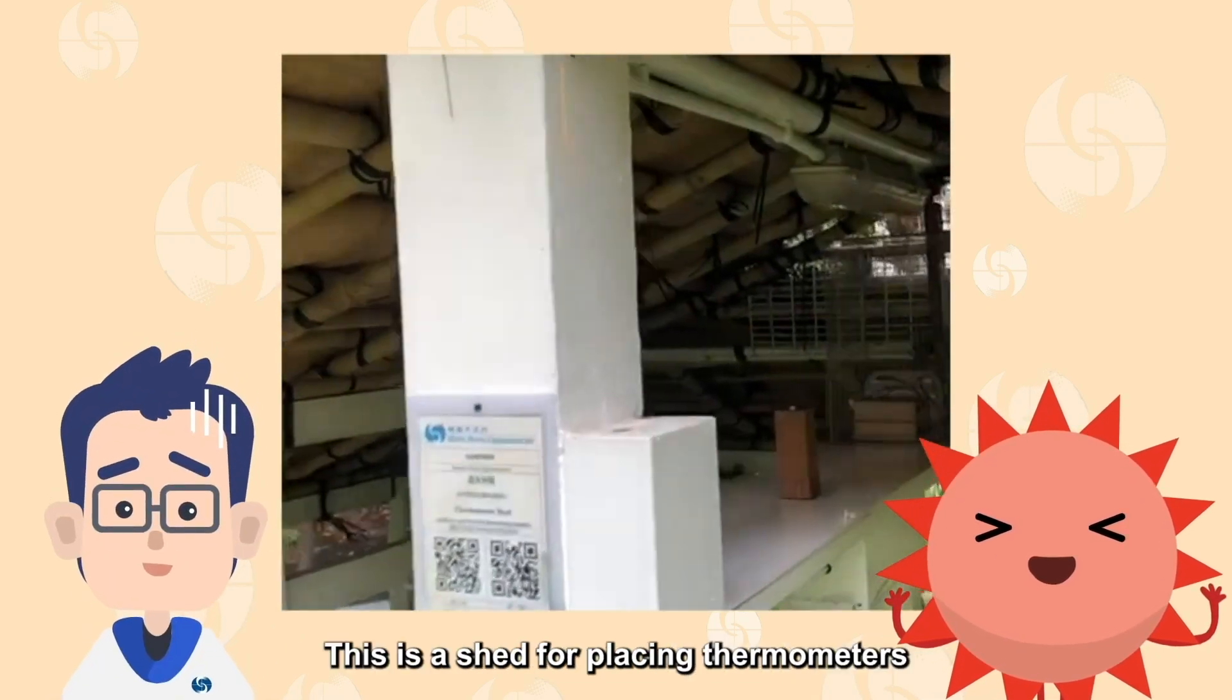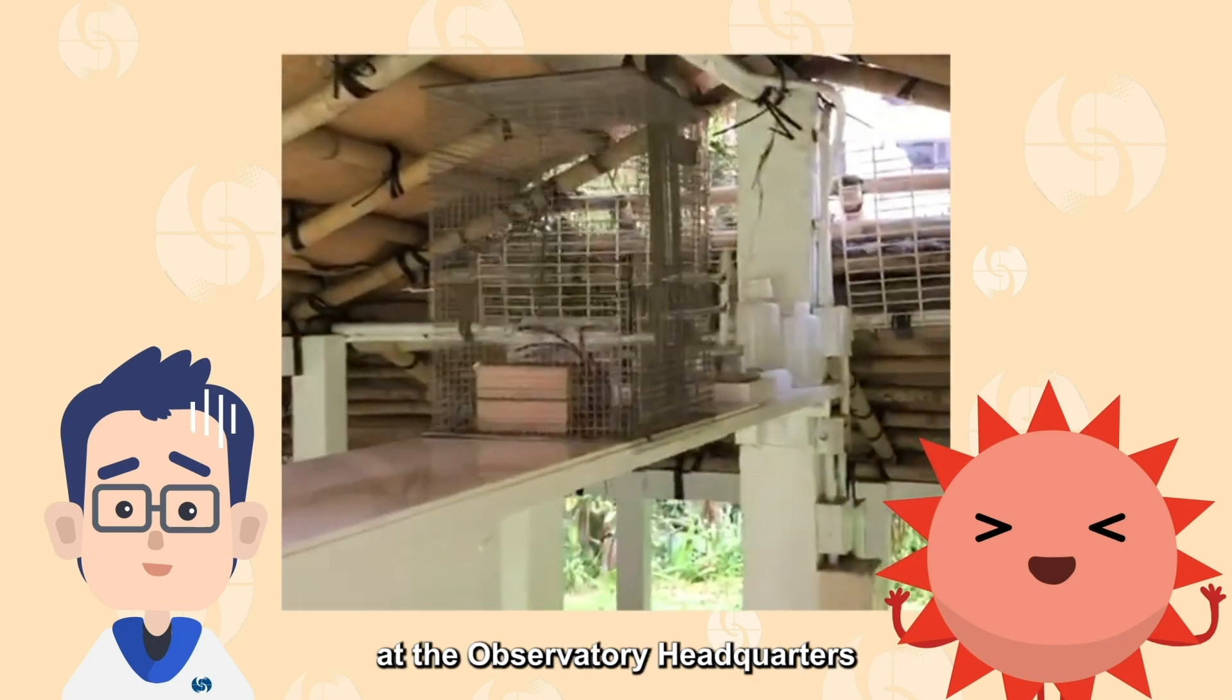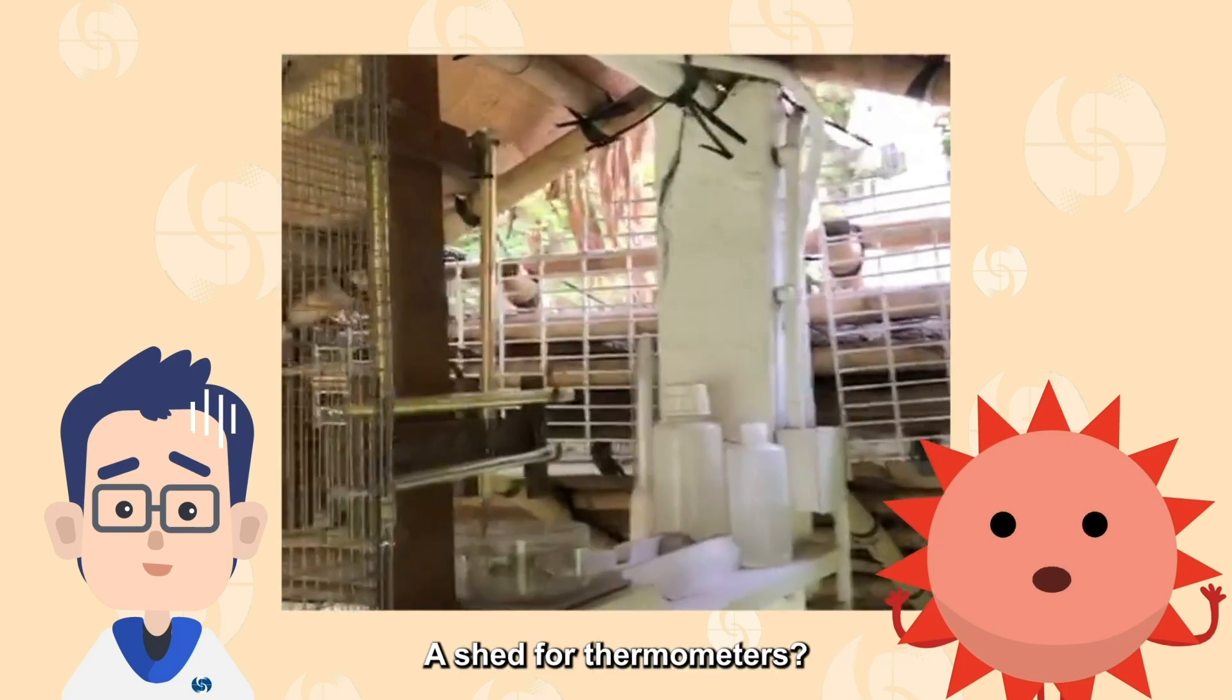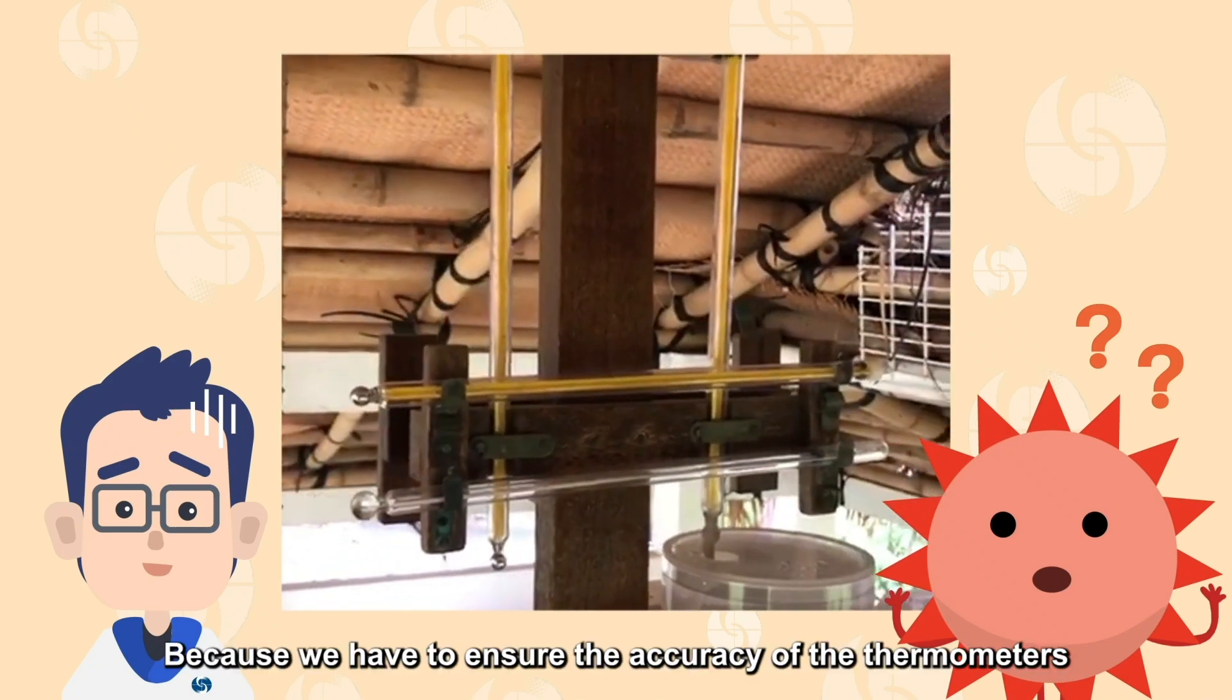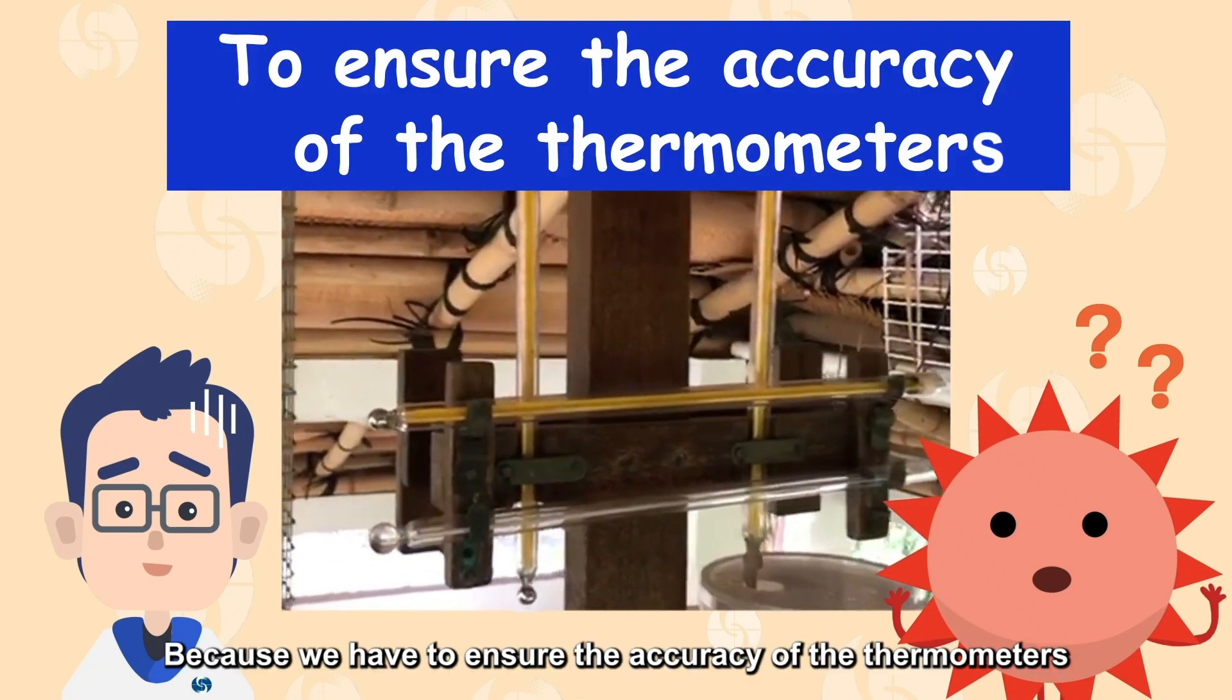This is a shed for placing thermometers at the observatory headquarters. A shed for thermometers? Why do thermometers have their own shed? Because we have to ensure the accuracy of the thermometers.